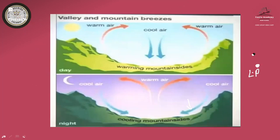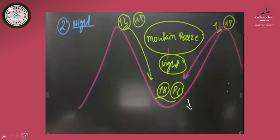Secondary winds have two types: one is seasonal winds — that is monsoon — and the other is periodic winds, which includes land breeze, sea breeze, mountain breeze, and valley breeze. These are all the secondary winds.